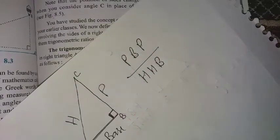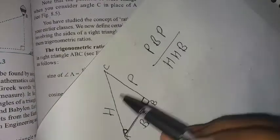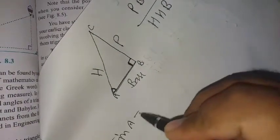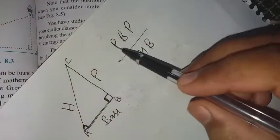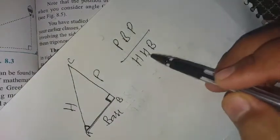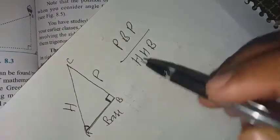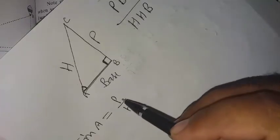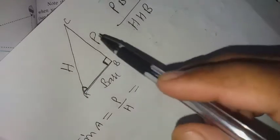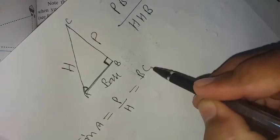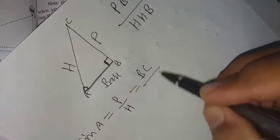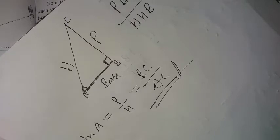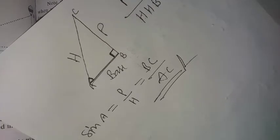If we have to find out the sine of angle A, we will write here 'Pandit Badri Prasad Haray Haray Bol.' So P upon H means perpendicular upon hypotenuse. Perpendicular is BC upon hypotenuse AC. That's how we can solve questions having trigonometric ratios.